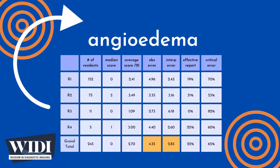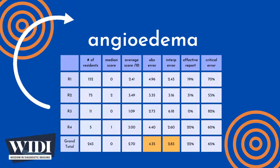On average, 4.35 points out of 10 were lost due to missed observations. At the same time, 2.83 points were lost due to interpretive errors.